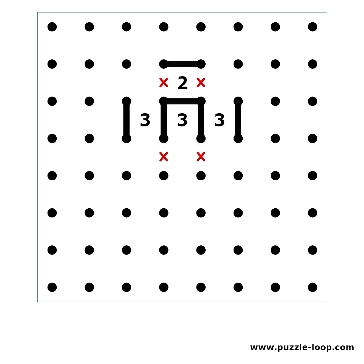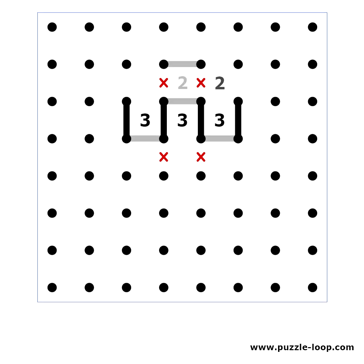Obviously if we have a 2 somewhere next to a middle 3, we can solve the entire segment. When the 2 is next to a 3 which is at the end, we can place a line above it. The 3s can be solved like this or like this. But in both cases there is a line above the 2.